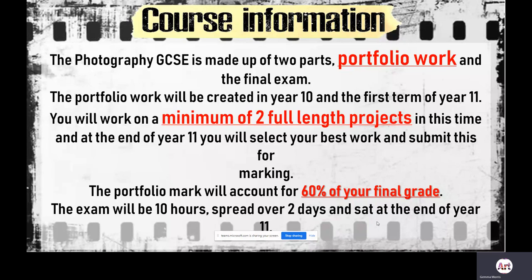Just to reiterate the course information: as part of GCSE photography you have two areas — a portfolio of work and the final exam set in January of Year 11. Your portfolio work will be created in Year 10 and in the first term back in Year 11 up until December, then you will do your exam work from January. You will need to evidence a minimum of two full-length projects for your portfolio of work, select your best work, and submit it for marking. The portfolio you are starting today will contribute towards 60% of your final grade.